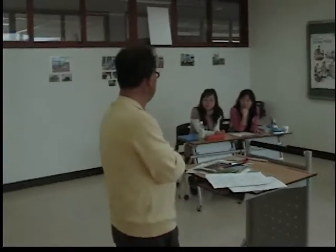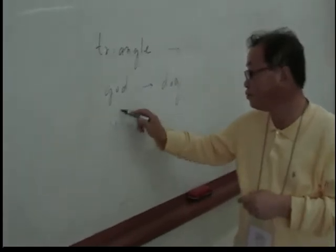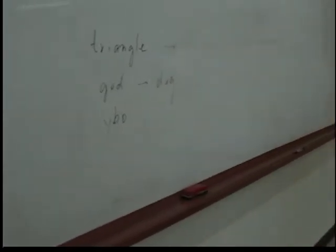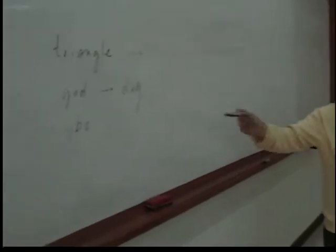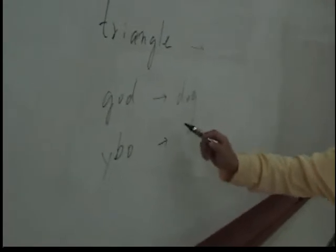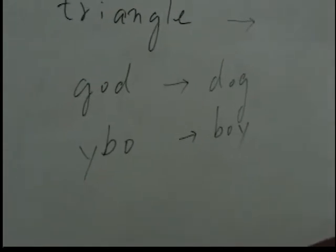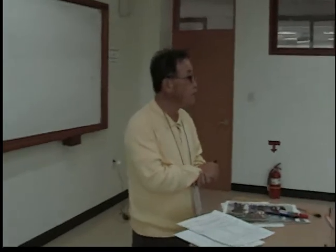Do you know what a jumble word is? An example is... we learned this to make another word — 'boy'. This is a jumble word. A jumble word is a word or phrase which is meaningless, but it gets meaningful when the order of the letters are changed.